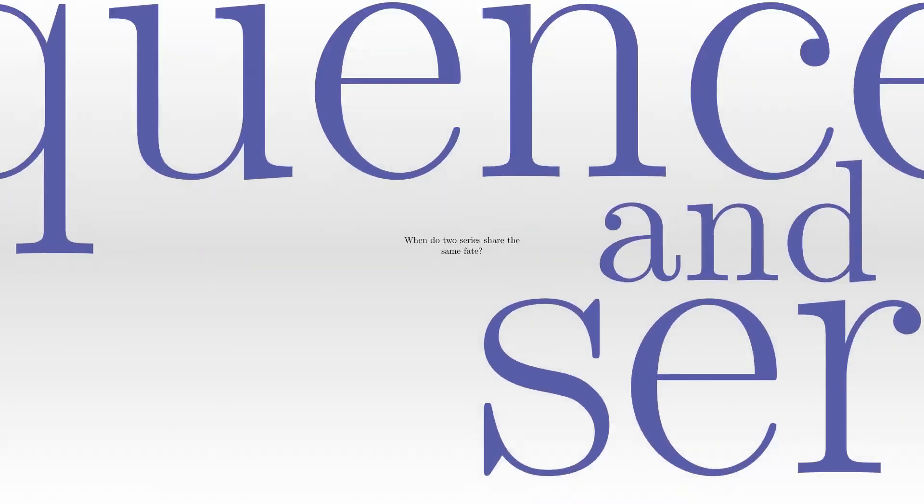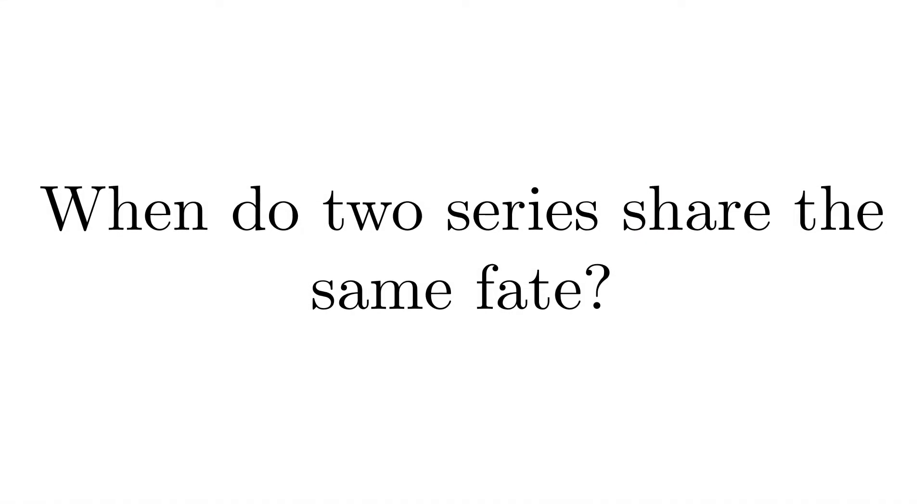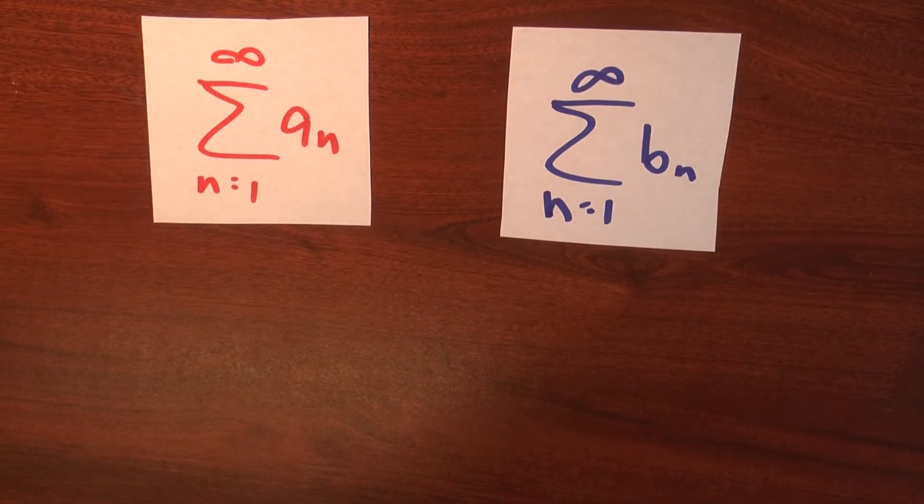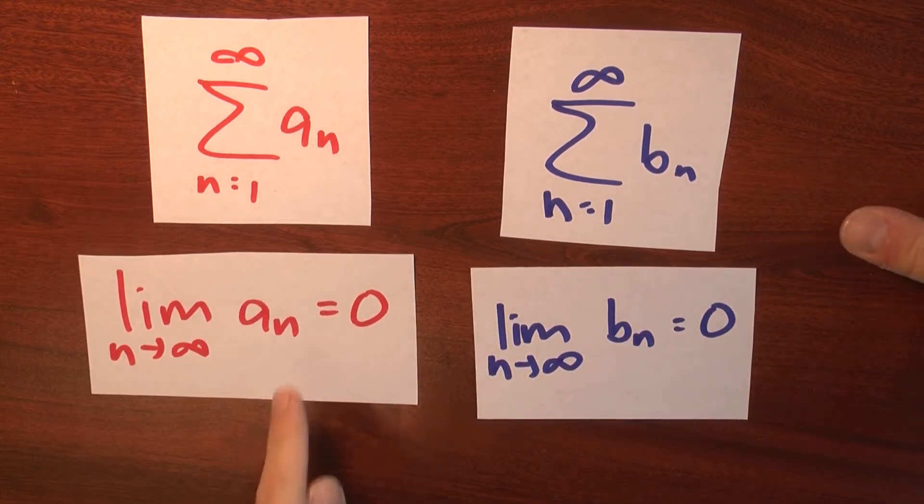The comparison test, again. Here's something that happens. Maybe you're analyzing a couple series, and the first thing that you do is try to apply the limit test. And you find that in both cases, the limit of the nth term is zero.